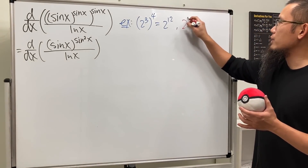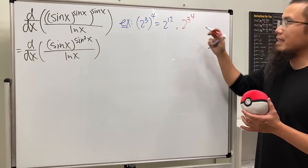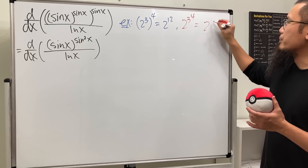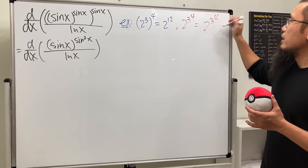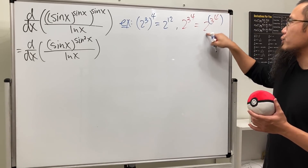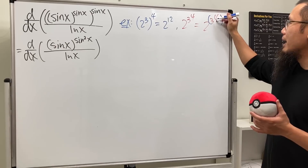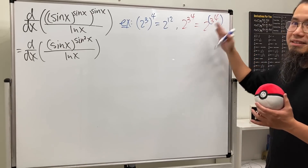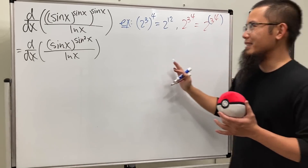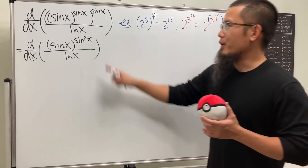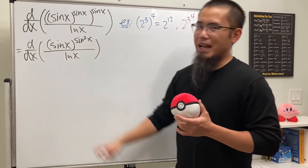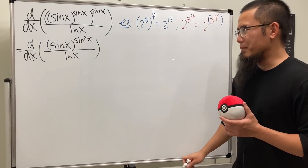Without parentheses — like 2 to the third to the fourth — you'd have to do 3 to the fourth power first and then 2 to that result afterward. That would be so much worse. So thanks to those parentheses, this is a little bit more manageable.